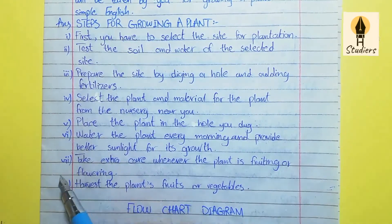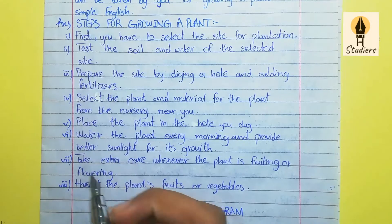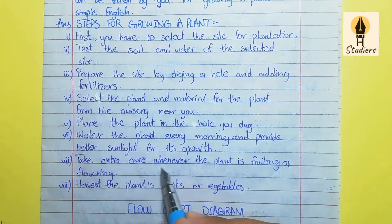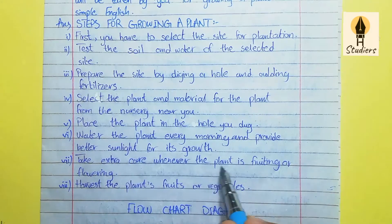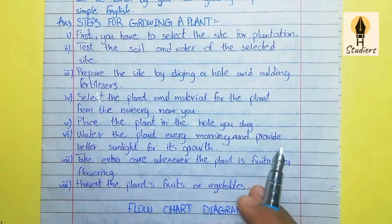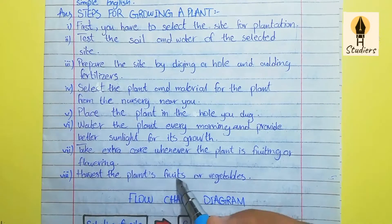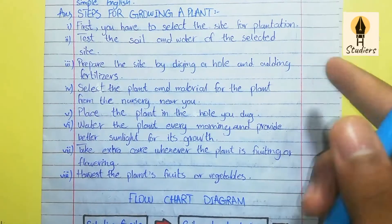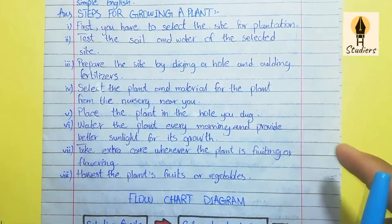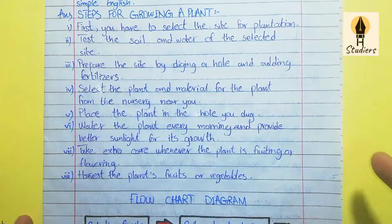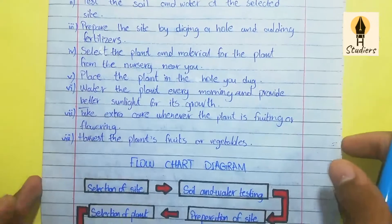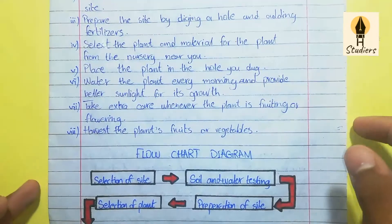Point 7: Take extra care whenever the plant is fruiting or flowering. Point 8: Harvest the plant's fruit or vegetables. So, these are the steps for growing a plant.